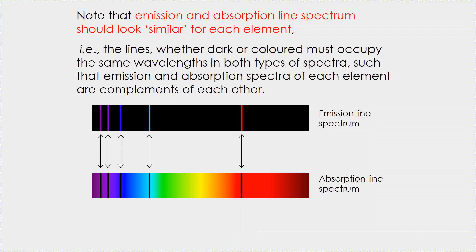So note that the emission and absorption line spectra should look similar if you use the same element in the gas — if the atoms in the gas are the same. This is because emission and absorption line spectra involve the transition between the same energy levels.